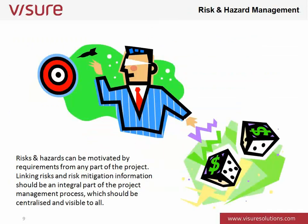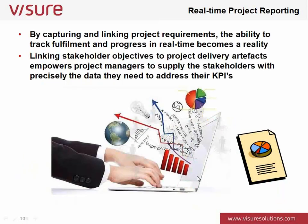We also need to think about risk and hazard management. Once you build this information into a requirements database, you can have a risk and hazard document. Risks and hazards can be motivated by requirements in any of those documents within the project. Linking risks and hazards to risk mitigation information should be an integral part of the project management process — centralized and visible to anyone who needs access to it. This is another element of traceability that can come out as a report from the database.